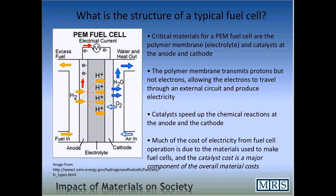We are now going to look in a little more detail about what reactions take place in a fuel cell and what kinds of materials are important. As mentioned, there are chemical reactions at both the anode and the cathode. In addition, you will notice in this diagram, in the middle of the fuel cell, there's a very special material called a polymer membrane. Looking at the anode reaction, the primary reaction is that hydrogen is split into protons and electrons.